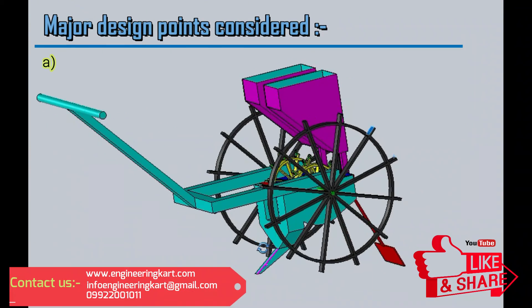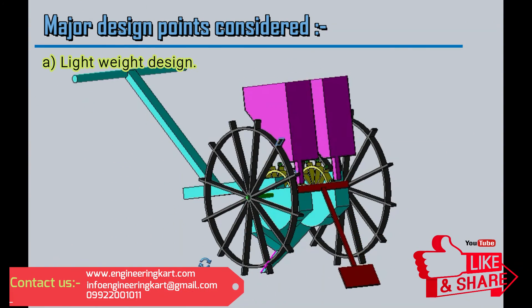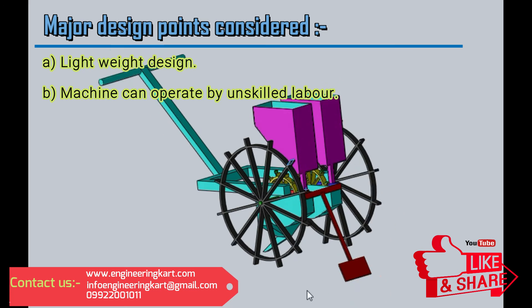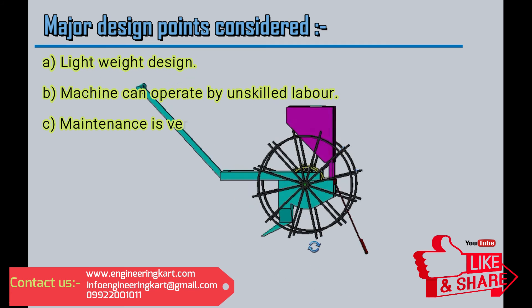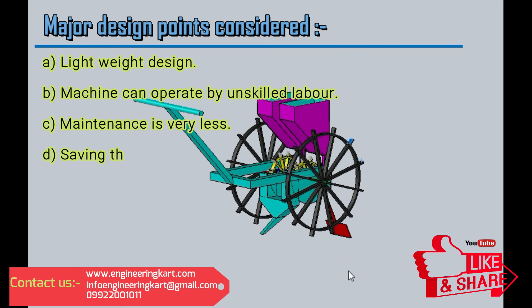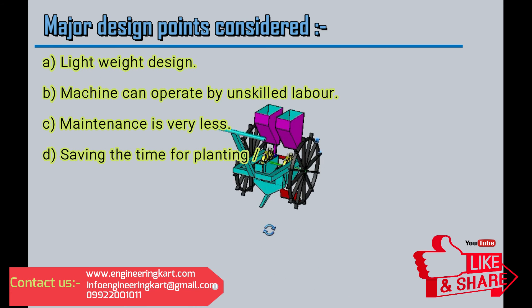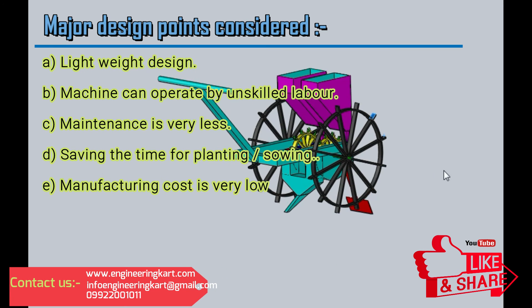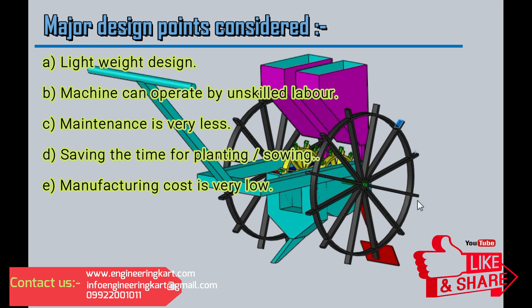Major design points considered: lightweight design, machine can operate by unskilled labor, maintenance is very less, saving time for planting and sowing, and manufacturing cost is very low.